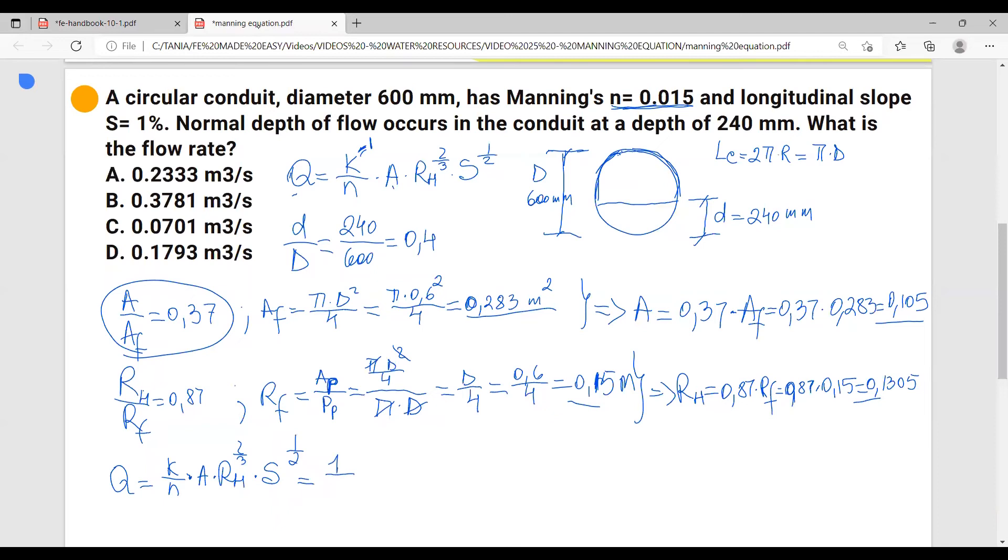So it's going to be 1 over 0.015 multiplied by the area which is 0.105, we just calculated there, multiplied by the hydraulic radius which we have calculated here, 0.1305 to two-thirds, and multiply by the slope which we already know—it's one percent given in the problem—one over two.